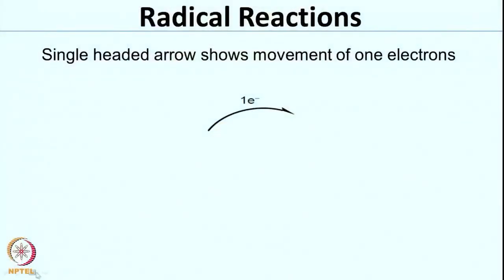So now we will look at another class of reactions. Radical reactions are different from polar reactions — they involve single electron species called radicals. To show the movement of single electrons, a single-headed arrow is used. For polar reactions we used a double-headed arrow, which indicates movement of 2 electrons, but a single-headed arrow indicates the movement of 1 electron. Radical species are very reactive.